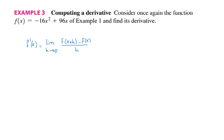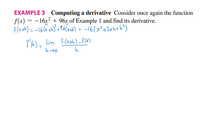Where f of x plus h is the same as f of x, but replace x by x plus h. So you will get minus 16 into x plus h squared plus 96 times x plus h. Distributing the power 2, and being careful to apply the perfect trinomial formula: x squared plus 2xh plus h squared. And then 96 times x is 96x, and 96 times h is 96h.